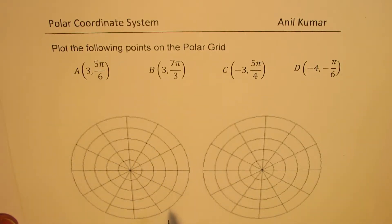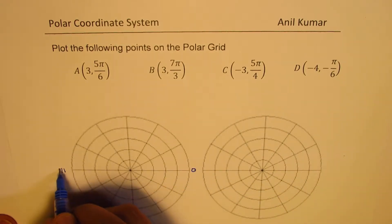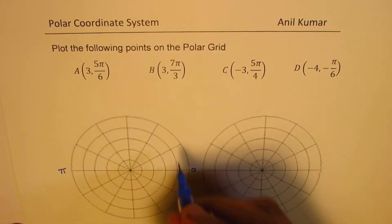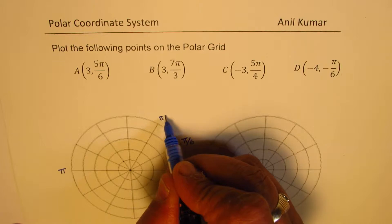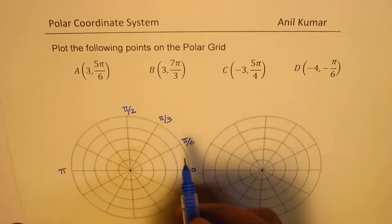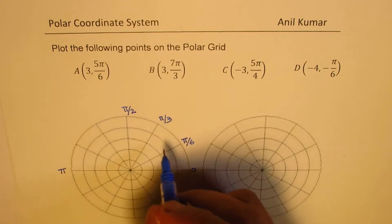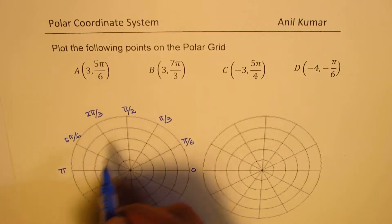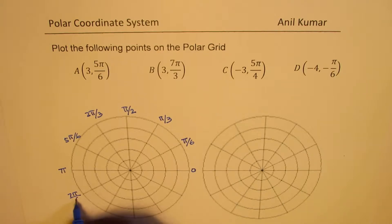On the polar grid, as you can see, this is 0 and that is π. We have divided the upper half into 6 portions, so each is π/6. So this is π/6, then 2π/6 or π/3, then 3π/6 or π/2, then 4π/6 or 2π/3, and then 5π/6.